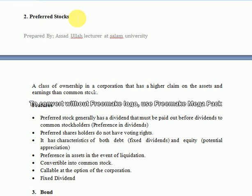Preferred stock issuers tend to group near the upper and lower limits of creditworthiness. Some issue preferred shares because regulations prohibit them from taking on any more debt. For example, a company may have the option to generate funds by issuing common stock, bonds, or preferred stock. Some companies issue preferred stock after having already used the first two options, and after that they no longer have the right to issue more debt because they risk being downgraded.